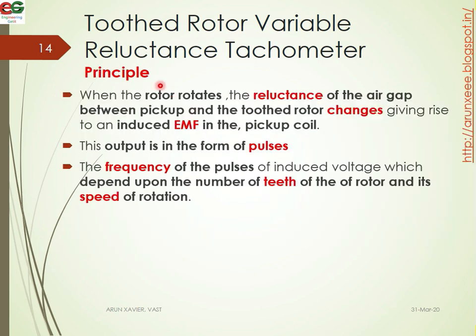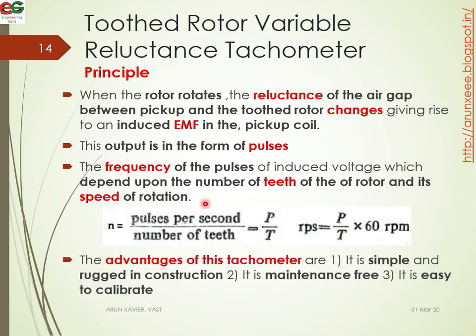After the rotor rotates, the reluctance of the air gap changes because of the toothed teeth. This develops an EMF which is picked up by the coil, and the output forms a pulse. The frequency of the pulse depends upon the number of teeth and the speed of rotation. The equation is N = P / T, where P is the number of pulses per second and T is the number of teeth. Therefore, RPS = P / T, and RPM = (P / T) × 60.